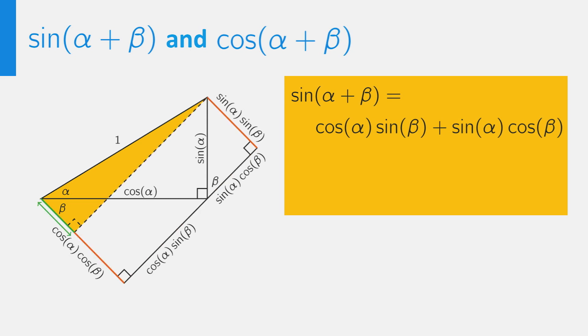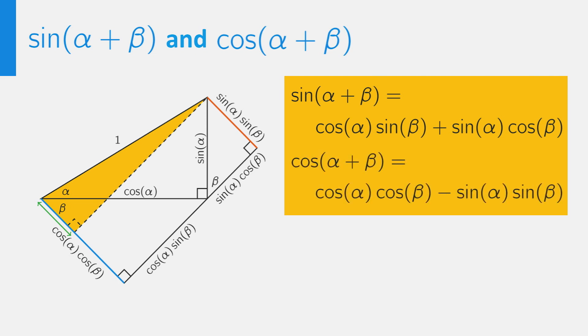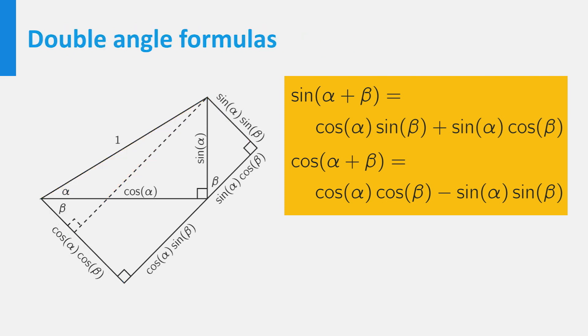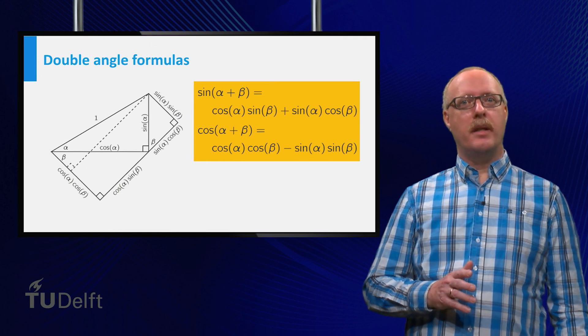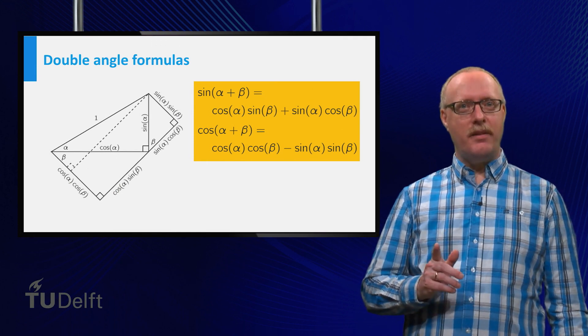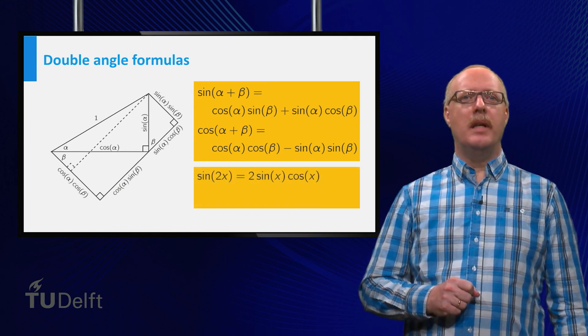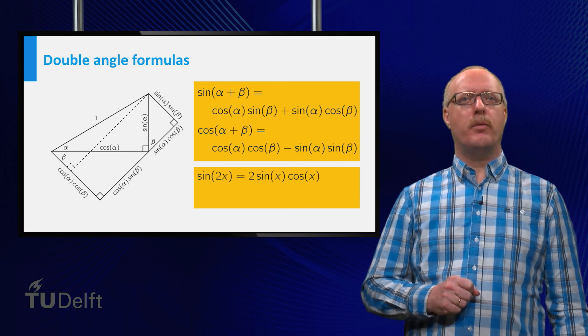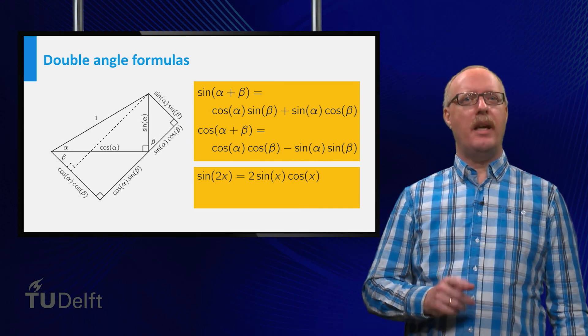For the cosine of alpha plus beta, we must have the green side, which is the difference between the blue side below and the orange side above. This leads to the addition formula for the cosine. If we take both alpha and beta equal to x, these formulas lead to the double angle formulas for the sine and for the cosine.